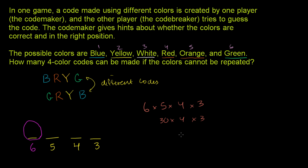So 30 times 12. So this is 30 times 12, which is equal to 360 possible four color codes.